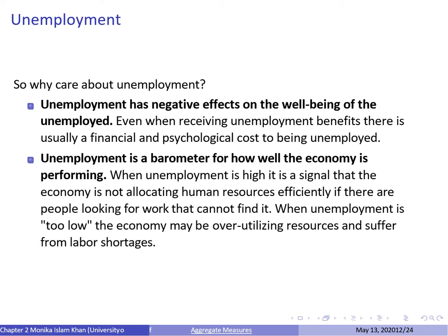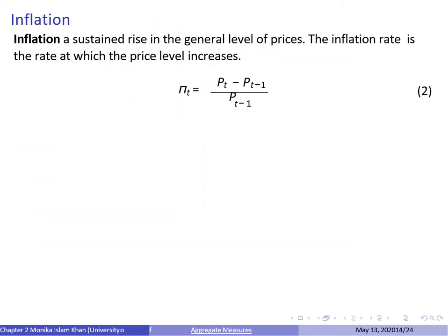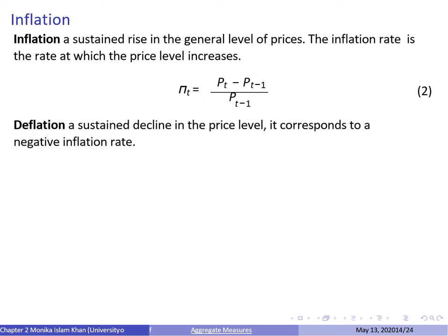Now let's move on to the inflation rate. Inflation is a sustained rise in the general price level. The inflation rate is the rate at which the price level rises over time, calculated as the price at time t minus the price at time t minus 1, divided by the price at t minus 1. Deflation, on the other hand, is a sustained decline in the price level, corresponding to a negative inflation rate, which is also not a good sign for the economy.